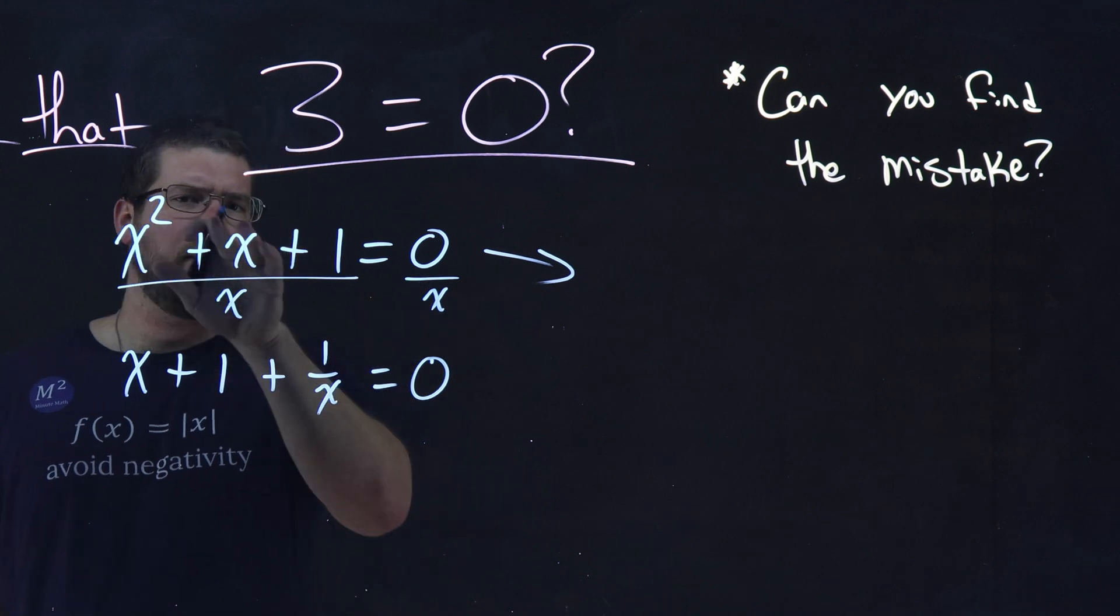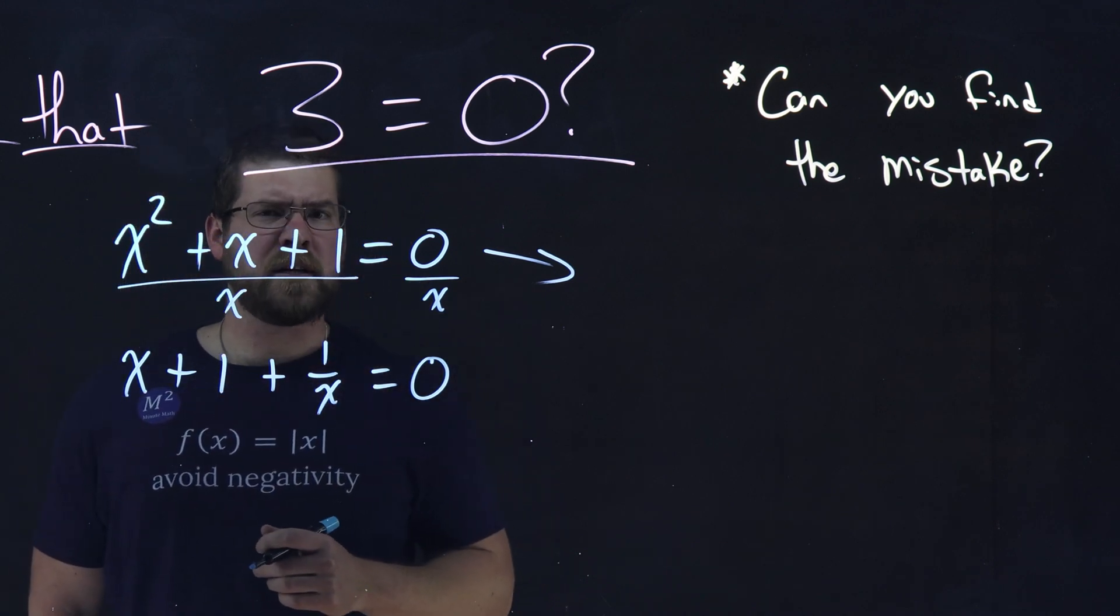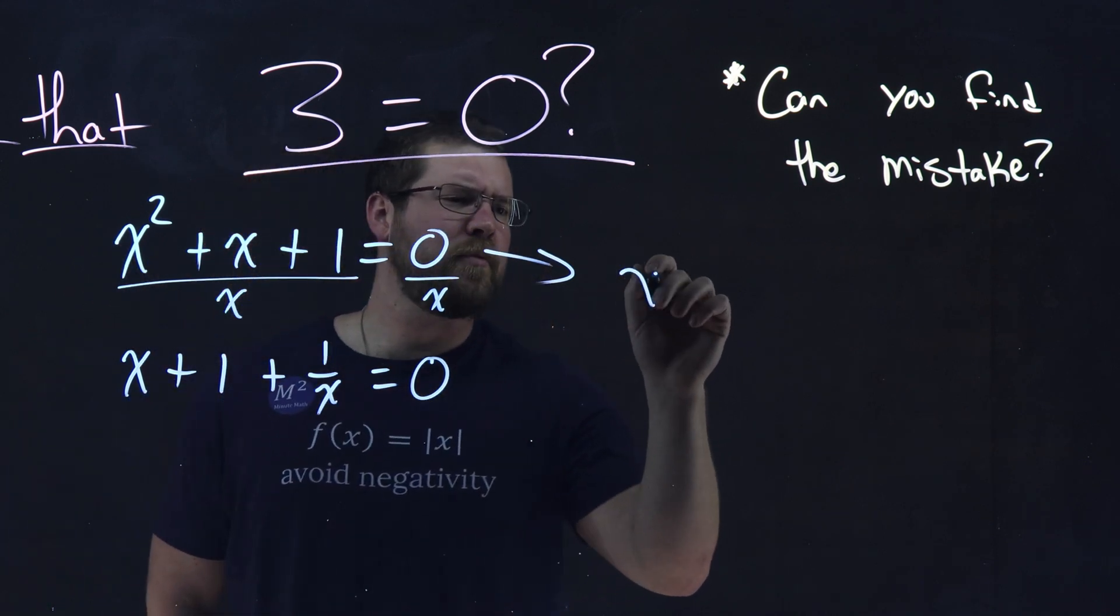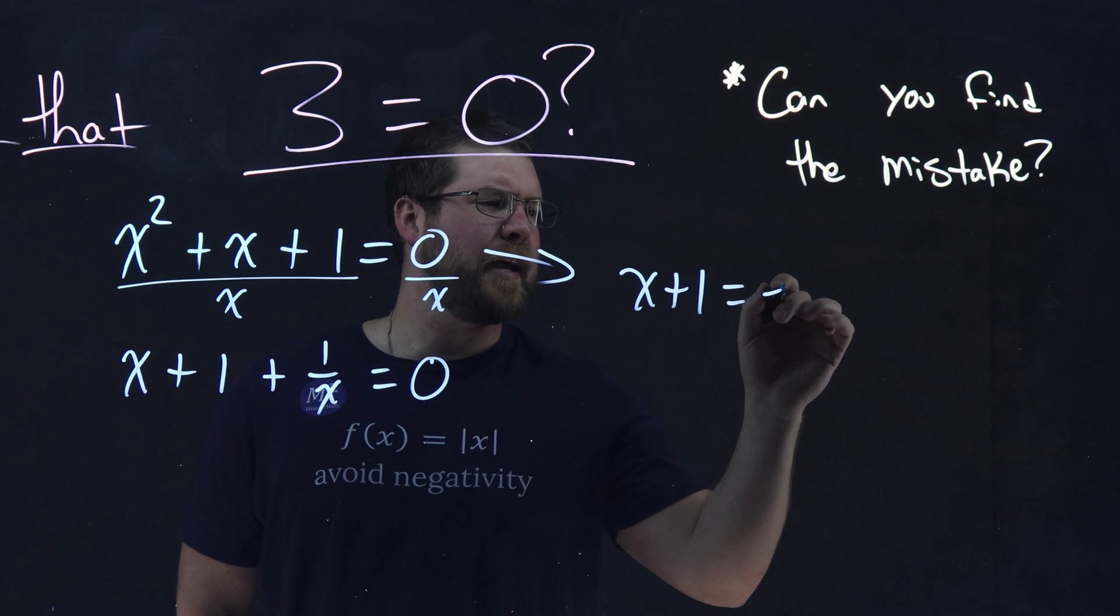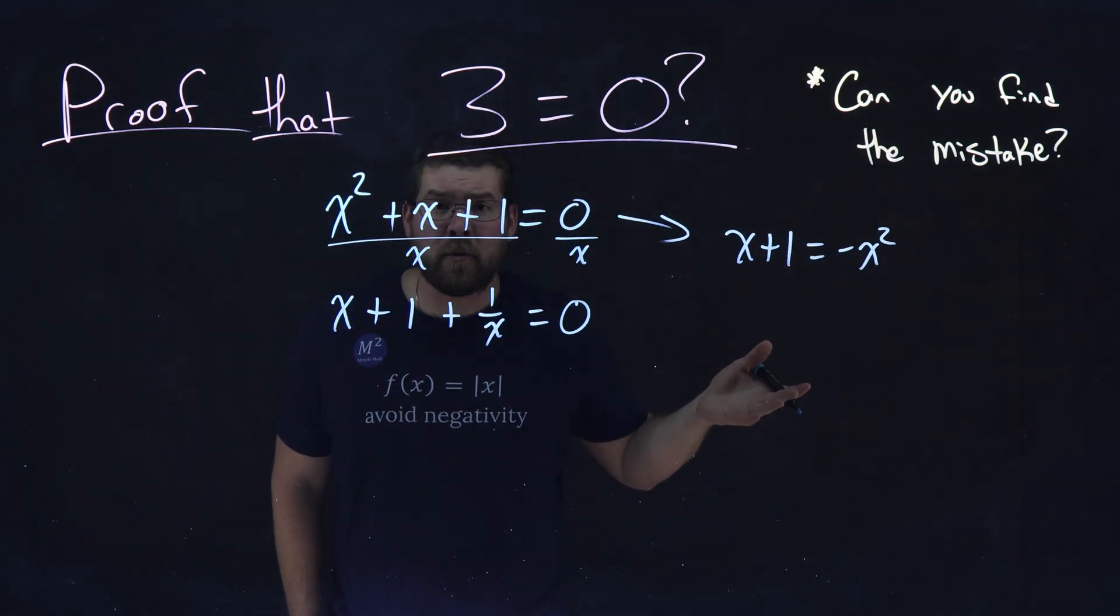Now I'm going to take this first equation that we had and actually get x + 1 by itself. I'm going to subtract x² from both sides, so I have x + 1 = -x². So far, so good. I haven't done anything wrong.